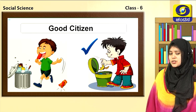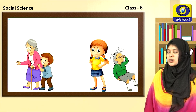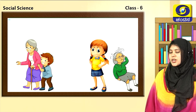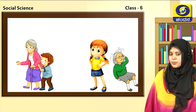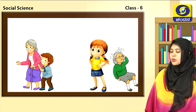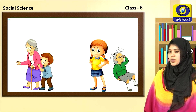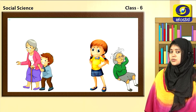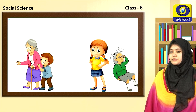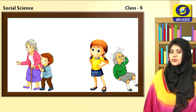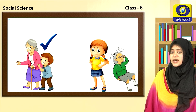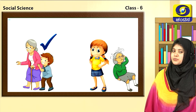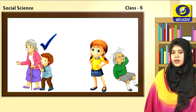Shall we go to the next image? Now compare these two pictures and tell me who can be the better citizen — a boy who is helping an old lady who has fallen down, or a girl who is standing arrogantly when the old lady has fallen. A boy who is helping the old lady is the better and good citizen.